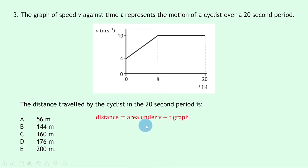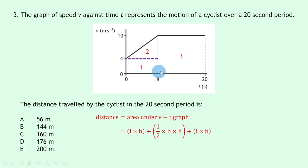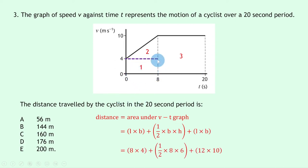Distance equals the area under the velocity-time graph. We split it into a rectangle and a triangle. Area 1 (rectangle): 8 × 4 = 32. Area 2 (triangle): ½ × 8 × 6 = 24, where the height is 10 − 4 = 6. Area 3 (rectangle): 12 × 10 = 120, since time goes from 8 to 20 seconds. Total: 32 + 24 + 120 = 176 metres, which is option D.